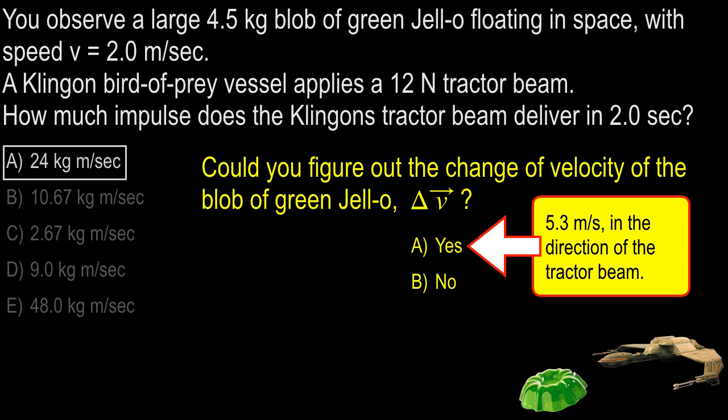In fact, delta V is about 5.3 meters per second in the direction of wherever the tractor beam is towing you. Question? Just delta P over the mass. That gives you delta V. And another way that you could do it, I mean, if you felt like it is, 12 newtons, there's your net force, mass 4.5, divide those two, you get the acceleration. Acceleration times 2 seconds, and that will get you 5.3 as well. So there's two ways to skin a cat. F equals MA is a little bit longer. And as I said, the impulse form is a little bit faster.